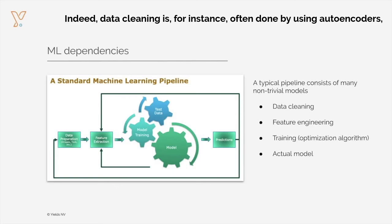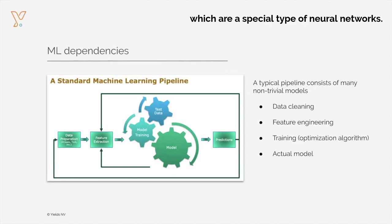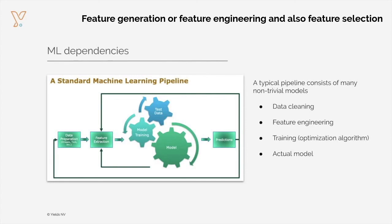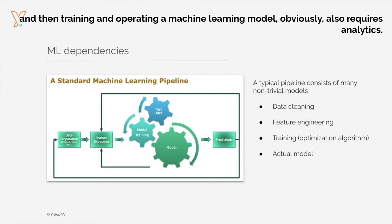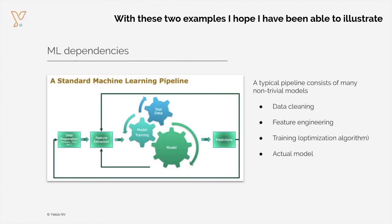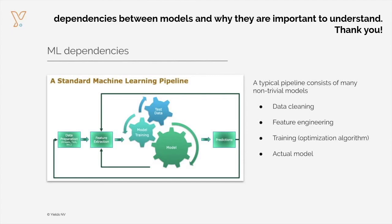Indeed, data cleaning is, for instance, often done by using autoencoders, which are a special type of neural networks. Feature generation, feature engineering, and also feature selection are typically also done in an algorithmic way to be efficient. And then training and operating a machine learning model obviously also requires analytics. With these two examples, I hope I have been able to illustrate dependencies between models and why they are important to understand.